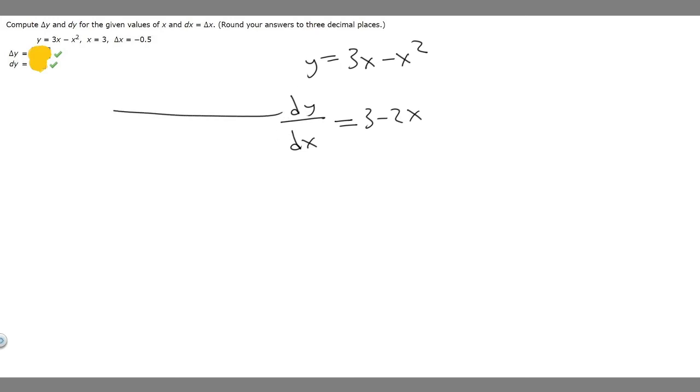Then in order to get dy by itself, because that's what we're solving for, we want to multiply both sides by dx. So it's going to become dy equals 3 minus 2x, then that whole thing multiplied by dx.